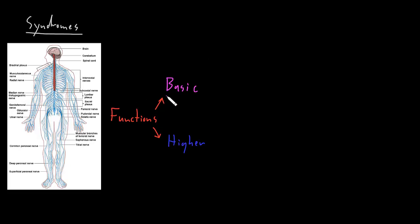The basic functions of the nervous system are performed by many parts of both the central nervous system — which is mainly the brain and the spinal cord — and the peripheral nervous system, which is mainly the nerves. The cranial nerves primarily perform the basic functions of the head and neck, whereas the spinal nerves primarily perform the basic functions for the limbs and trunk, because that's where those nerves generally go.